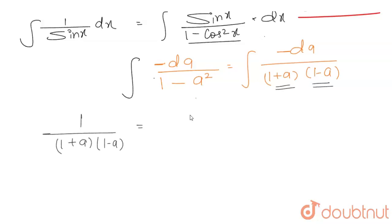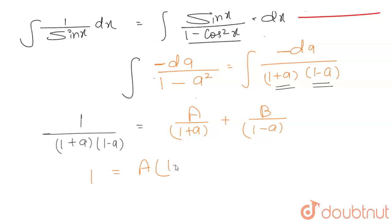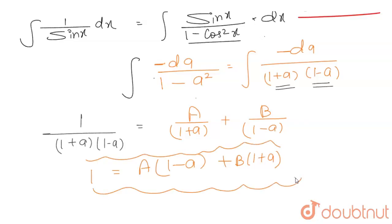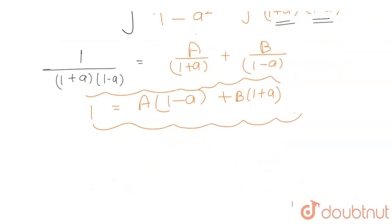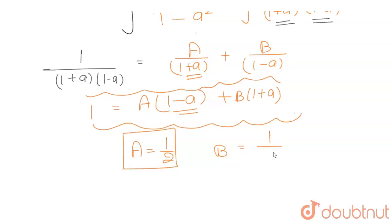A और B की value निकालनी है। अगर t = minus 1 put करूँगा, तो A की value आएगी 1 by 2 — B वाला term 0 हो जाएगा। और obviously B की value भी 1 by 2 आएगी। तो A और B दोनों की value 1/2 आई।